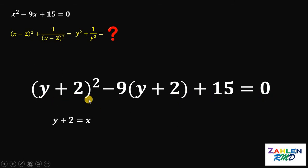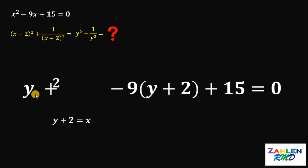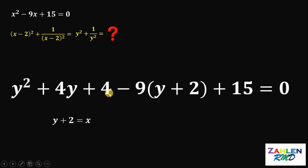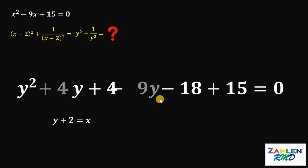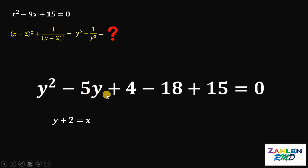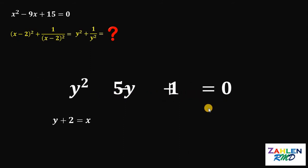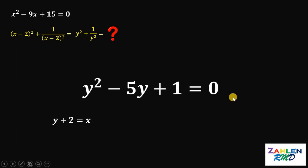Now y plus 2 quantity squared is equivalent to y squared plus 4y plus 4. Distribute negative 9 to y plus 2 and we have negative 9y minus 18. Now let's combine similar terms: 4y minus 9y gives us negative 5y, and 4 minus 18 plus 15 gives us positive 1, and we know that it is equal to 0.